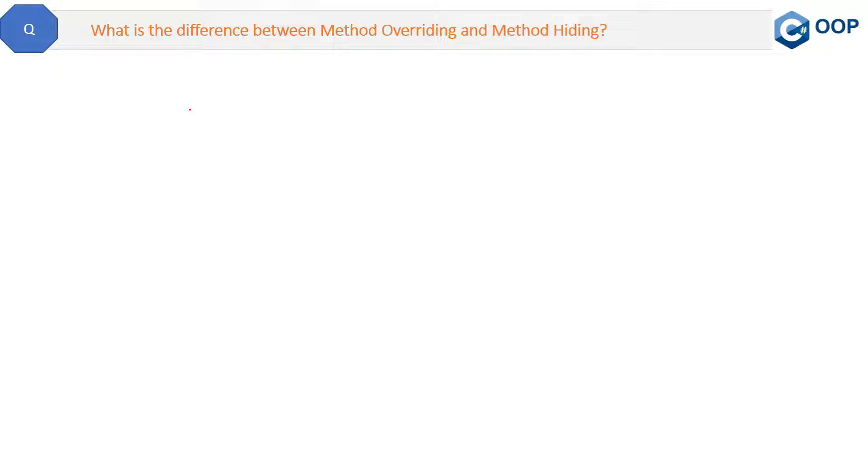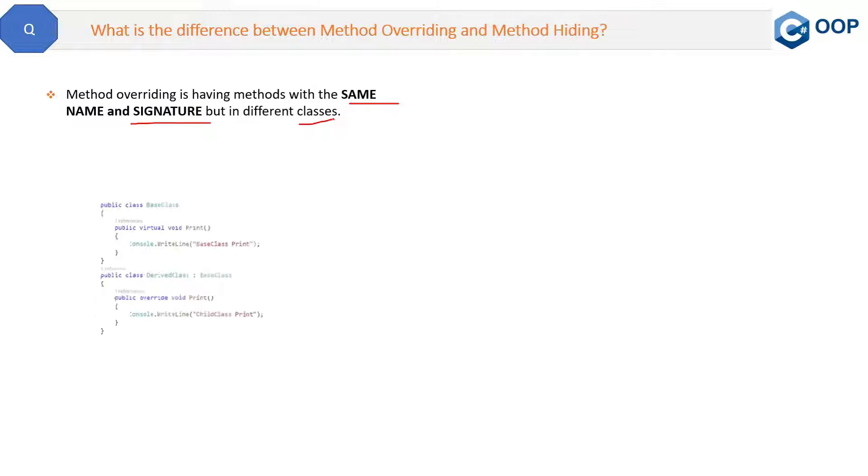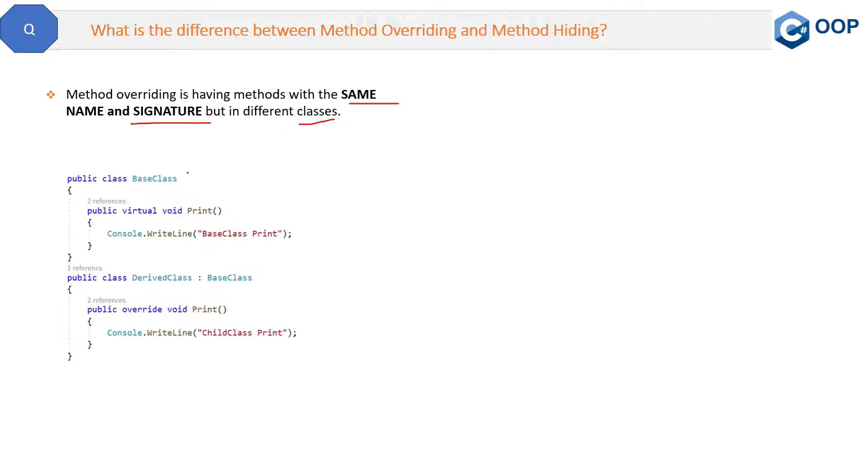We already explained method overriding in a previous video, but let's see the definition here. Method overriding is having methods with the same name and same signature but in different classes. This is method overriding.